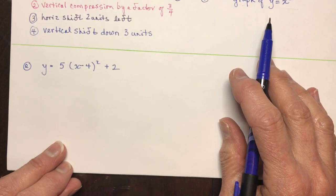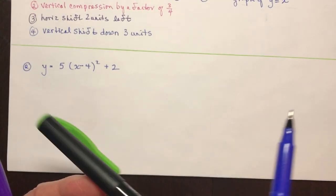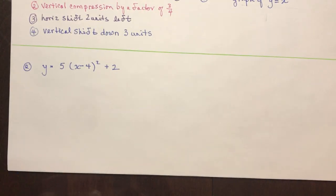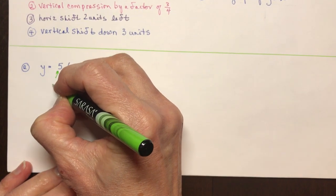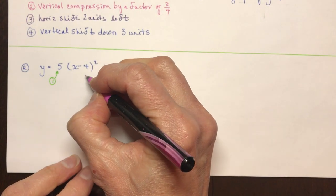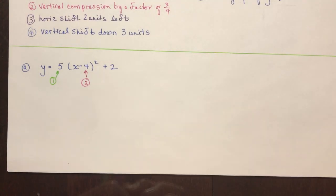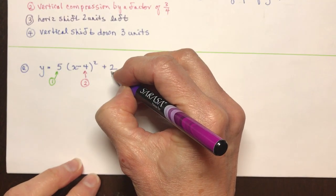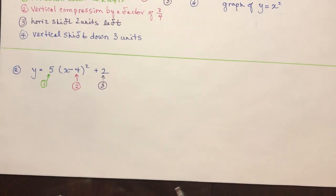Let's look at this last example. Here's my first transformation — that 5. Everything is a transformation unless it's still just x squared. That's transformation 2, and this one here is transformation 3 — so there are only 3 transformations that have happened to this function.